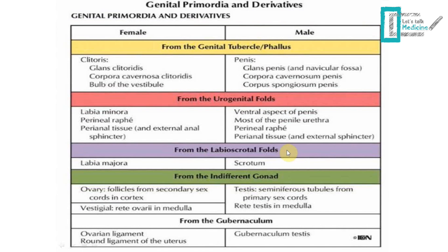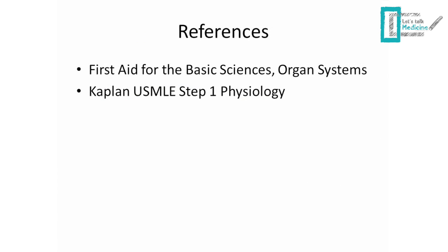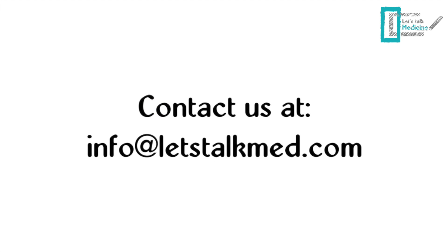Here are the references I used for this video. I highly recommend First Aid for the USMLE Basic Science Organ Systems — especially if you have trouble with embryology of the genital tract, most of the information in the slides came from this book. I also used the Kaplan USMLE Step 1 Physiology book, which covers how the ducts differentiate. If you have any questions or comments, here are the ways to reach me. Thank you very much for listening, goodbye.